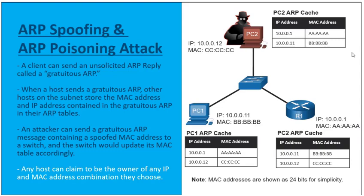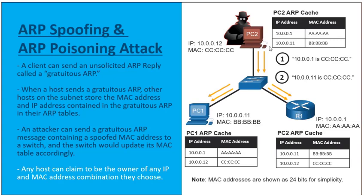Here in our graphic, we've got PC1, PC2, and R1. They all have ARP caches that are up-to-date and correct. But what's going to happen is PC2, the threat actor, is going to send out a gratuitous ARP claiming that 100.1, the IP address of the router, is reachable by using MAC address all-C's, which is the MAC address of the threat actor.